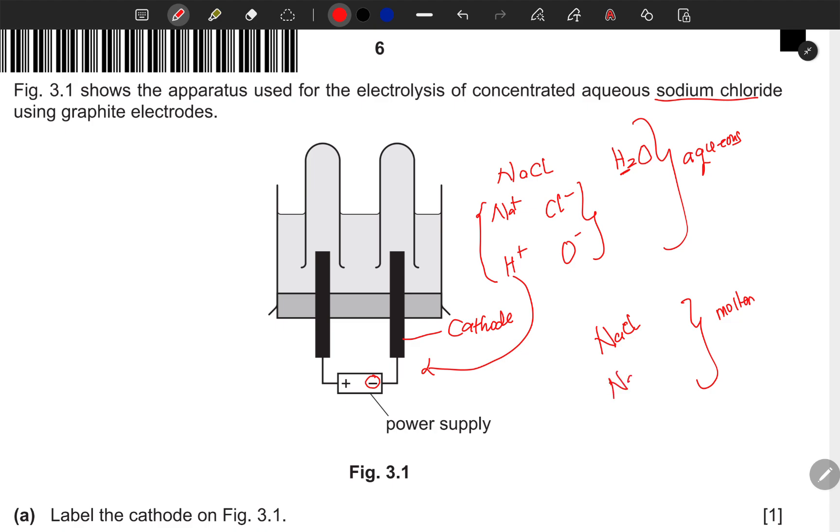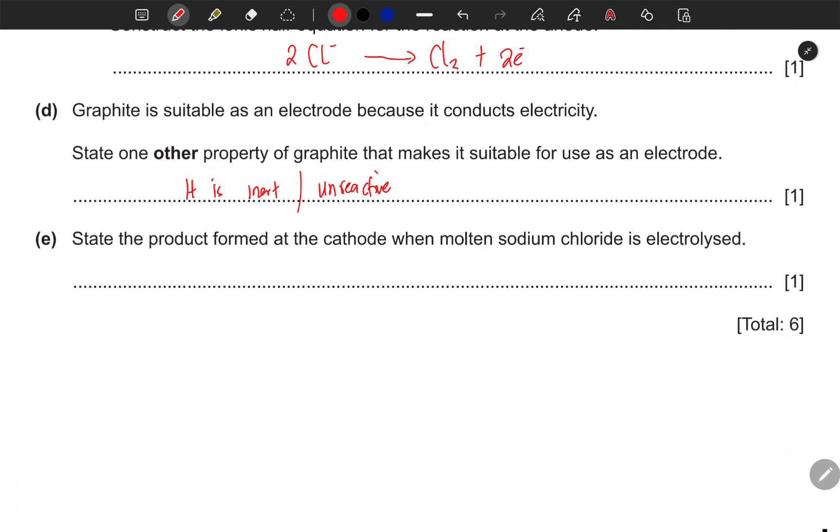That means we only have the sodium ion and the chloride ion. There's no need of having the hydrogen and oxygen ions. That means at the cathode, the only one which can be deposited there is the sodium itself. Sodium.